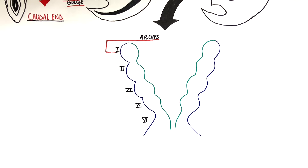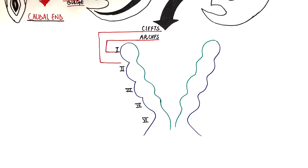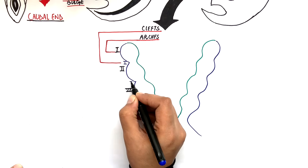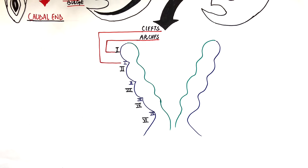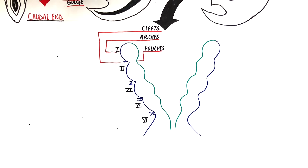The fifth pharyngeal arch does not exist in humans — it either disappears once it's formed or it's not formed at all. On the outer aspect, the pharyngeal arches are separated from each other by the pharyngeal clefts, also called the pharyngeal grooves. The pharyngeal grooves are four in number. The first pharyngeal cleft lies in between the first and second pharyngeal arch. From the inner aspect, the pharyngeal arches are separated by small concavities or depressions called the pharyngeal pouches, which are also four in number.